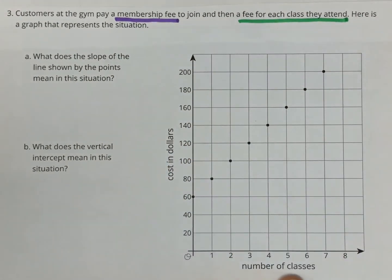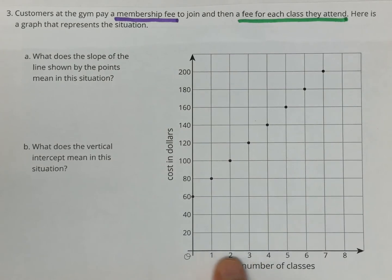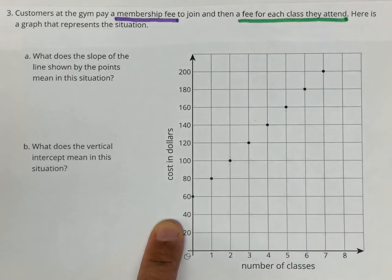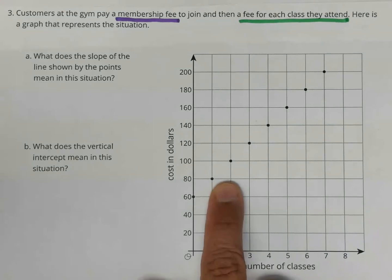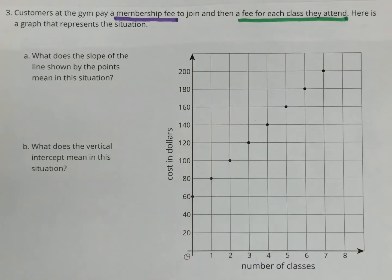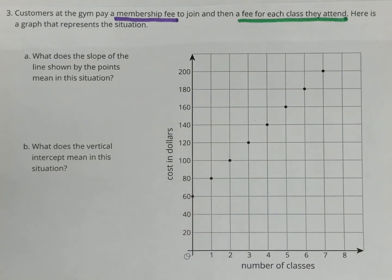The graph here has the number of classes as the x-axis and the cost in dollars as the y-axis. I want you to see here in this axis, it's going by ones. So every time you increase by a class, you pay the same amount every time. That's why these points line up as a graph. So the first thing I'm going to do is draw some slope triangles.